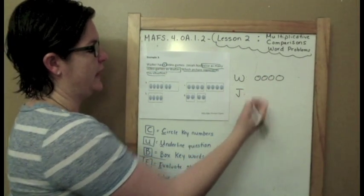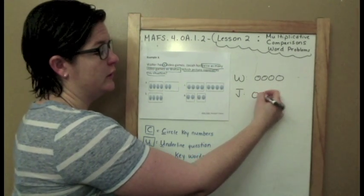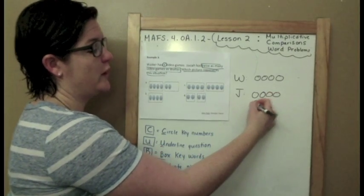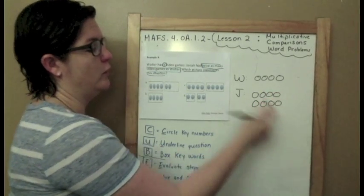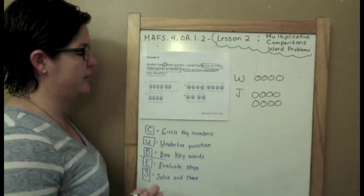Josiah has twice as many video games as Walter, so Josiah would have 1, 2, 3, 4, but twice that. So we've got to write what Walter has twice. That means 2 times. So which picture represents this?